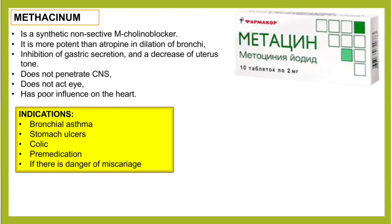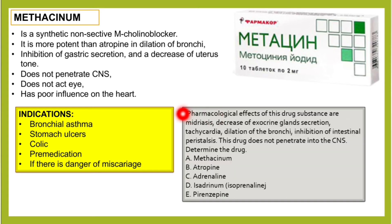Indications for metacine include bronchial asthma, stomach ulcers, colic, pre-medication, and it can also be used when there is a danger of miscarriage.